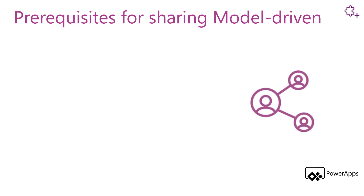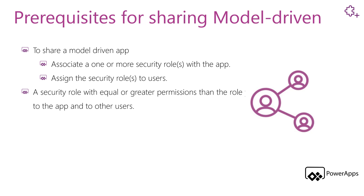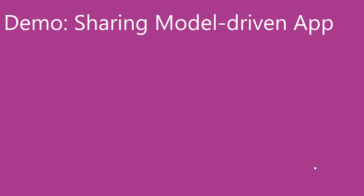To share a model-driven app, you have to perform two steps. The first step is to associate one or more security roles with your app that you want to share. The second step is to assign the security roles to users. You have to ensure that you have a security role with equal or greater permissions than the role you are assigning to the app and to other users.